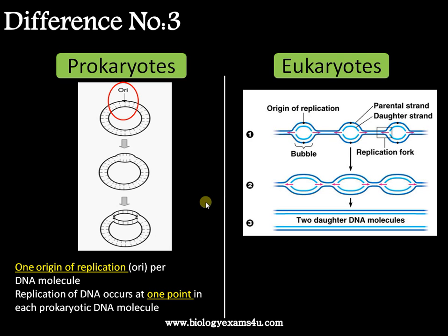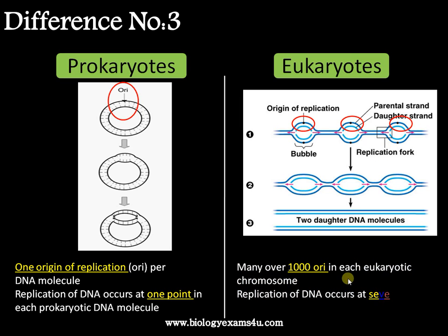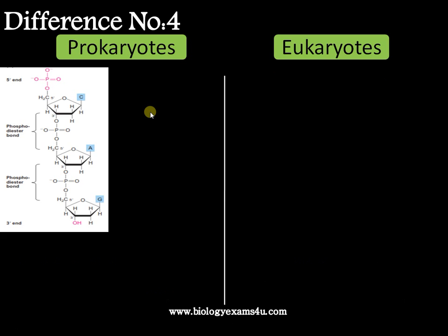In the case of eukaryotes, the genome is very vast — 50 or more times larger than the prokaryotic system. Therefore, there are many ORIs — thousands of origins of replication in each eukaryotic chromosome — and replication occurs at several of these points simultaneously in order to replicate this large amount of DNA.